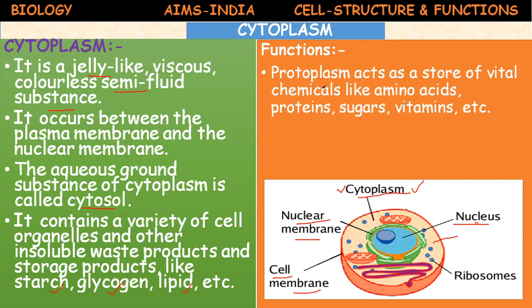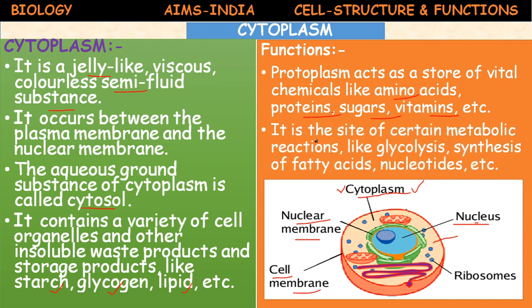Functions of cytoplasm: the protoplasm acts as a store of vital chemicals like amino acids, proteins, sugars, vitamins, and hormones. The cytoplasm is the site of certain metabolic reactions like glycolysis — part of respiration — synthesis of fatty acids, and nucleotides. These metabolic activities take place inside the cytoplasm. The maximum portion of this cytoplasm contains water: 80 to 90 percent of the cytoplasm is water.